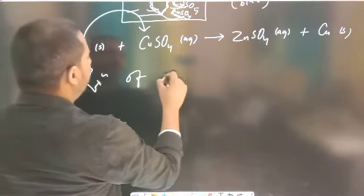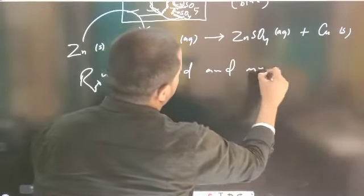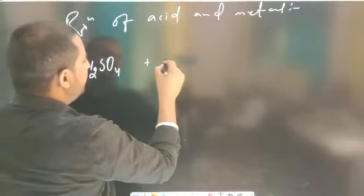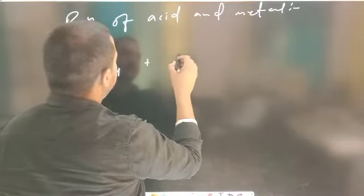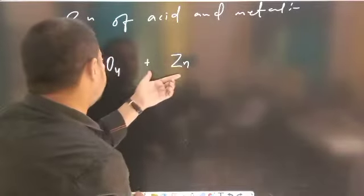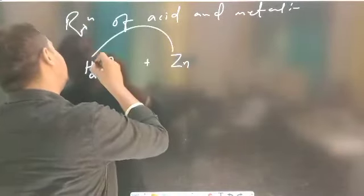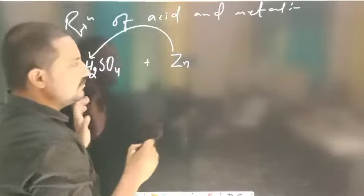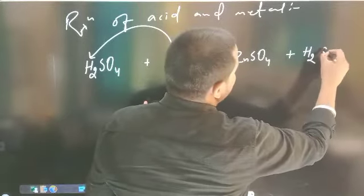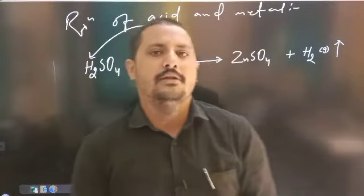Iske alawa dekhiye — reaction of acid and metal. When sulfuric acid is poured on zinc granules, zinc metal ke tukdon pe sulfuric acid daala jaata hai, to yahan bhi displacement reaction hoga. Zinc woh hydrogen ko displace kar dega — so zinc sulfate salt banega aur hydrogen gas banega, jo release ho jaayegi. Ye bhi displacement reaction ka example hai.